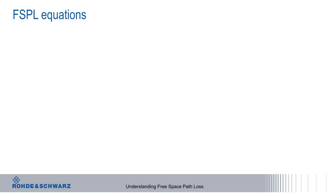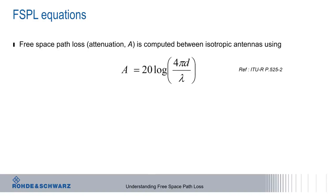So let's look at the actual free space path loss equation. We compute free space path loss, usually called A for attenuation, between isotropic antennas using a rather uncomplicated formula. A equals 20 log of 4 pi d over lambda, where lambda is wavelength in meters and d is distance in kilometers.